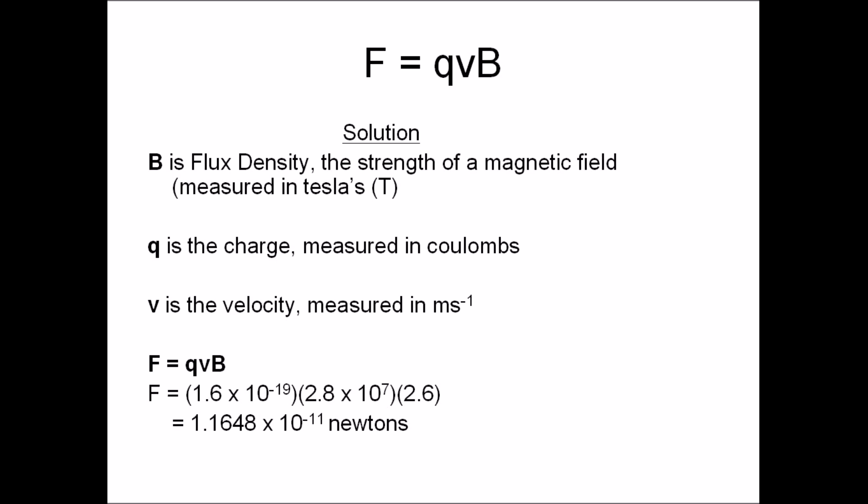Here's how you solve this. The formula you use is F is equal to QVB in which F is the force, Q is the charge, V is the velocity and B is the flux density. Flux density is basically how strong the magnetic field is.